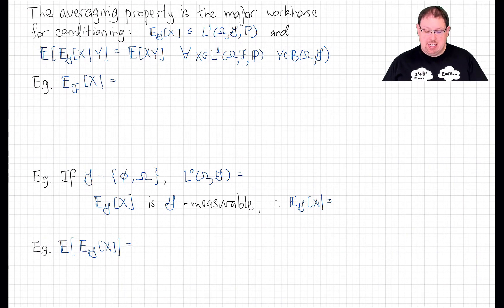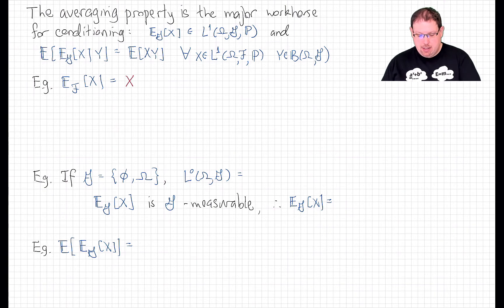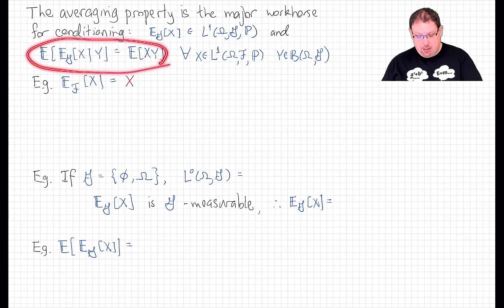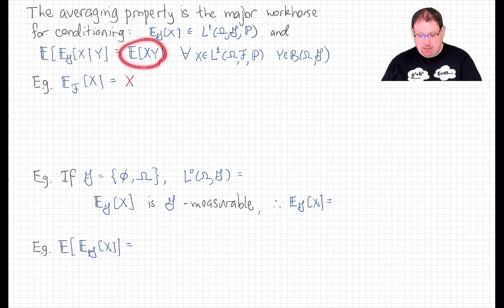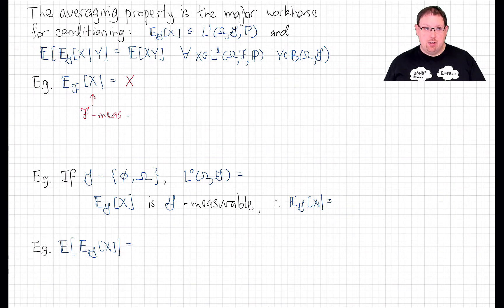As the first basic example, what happens if we condition on the full sigma field F that we started with? Well, in that case, the conditional expectation of X is actually just X itself. To see that, simply note that X is of course an F-measurable random variable and vacuously satisfies this equation: the expected value of X times Y is the expected value of X times Y for every F-measurable Y. If F were L2, this is just reflecting the fact that if you orthogonally project a vector into a space where it already lives, you just get that vector back.